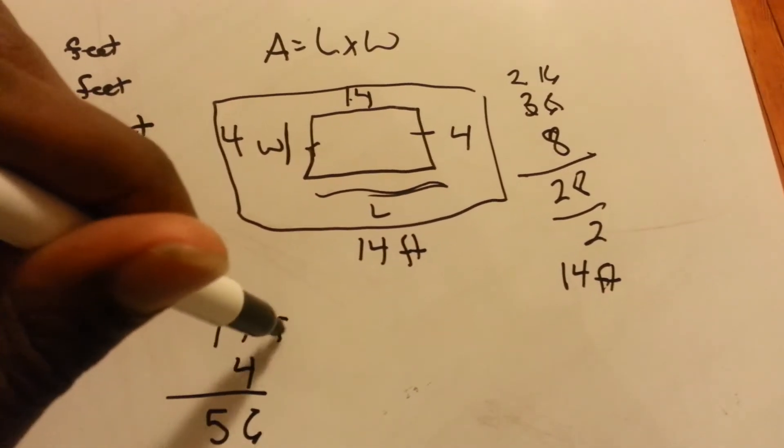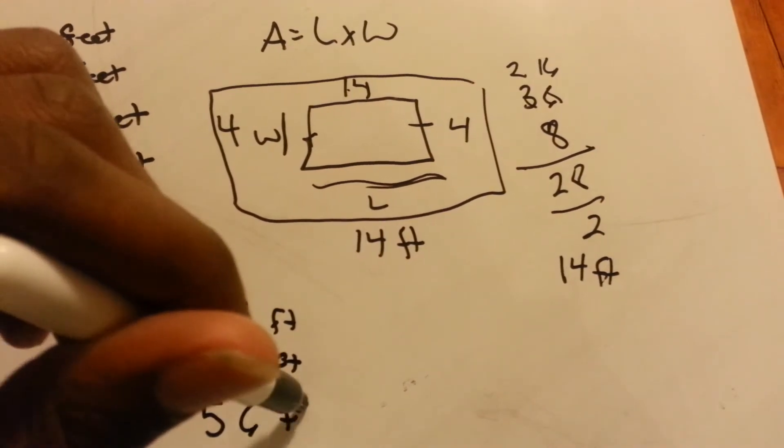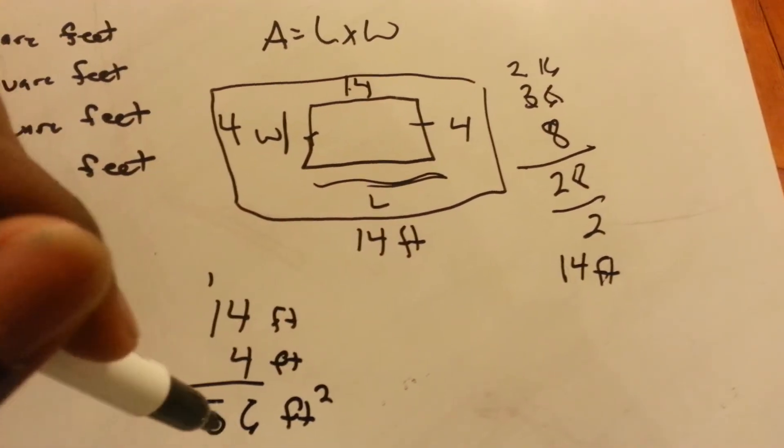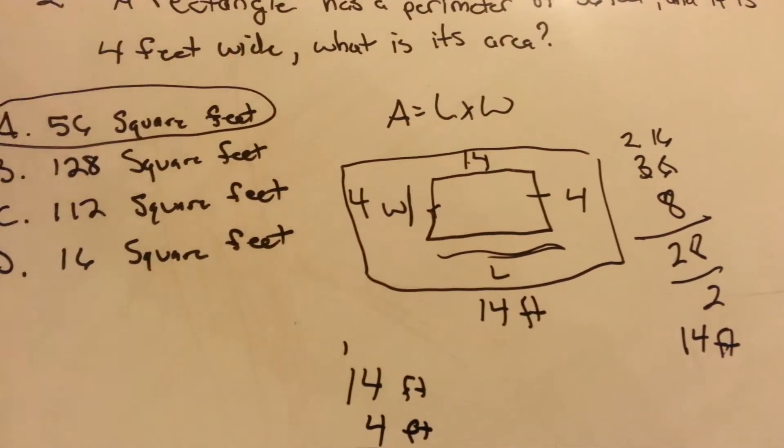We are multiplying feet times feet, so the answer is feet squared. 56 feet squared. Answer A.